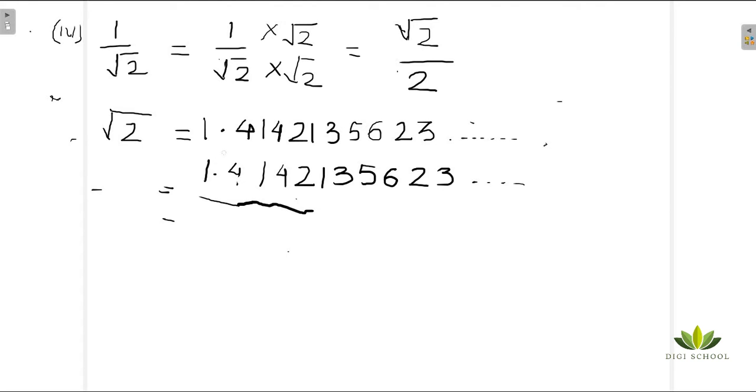The value is 0.7071067. So this is non-terminating, non-recurring number. So it is also an irrational number. 1 upon under root 2 is an irrational number. Now we will be solving the fifth part of this question.